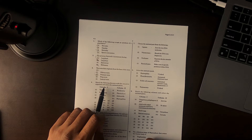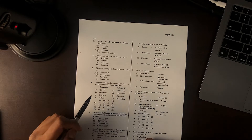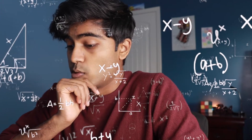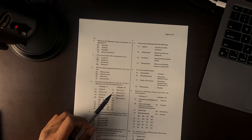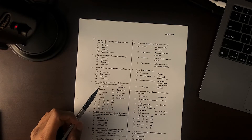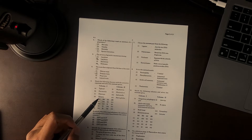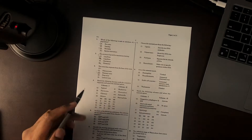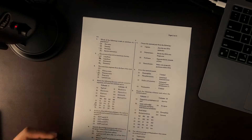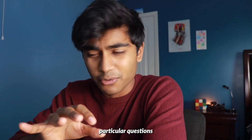Question four: match the following diseases with the causative organism and select the correct option. I don't remember this. Salmonella is like in food, right? And I know that's not typhoid, pneumonia, or malaria. So I think whatever has three with C — why not three? These are very particular questions. Like, you just don't know it.